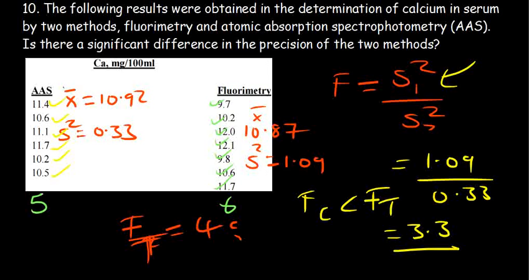At different percentages. Question ten is looking at the issue of the precision of two methods. He basically gets to compare them using what we call the f-test.